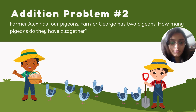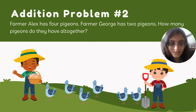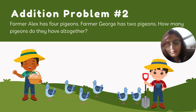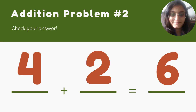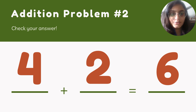If you count all those pigeons: one, two, three, four, five, six — that means there are six pigeons. So four pigeons plus two pigeons equals six pigeons. Let's move to the third question.